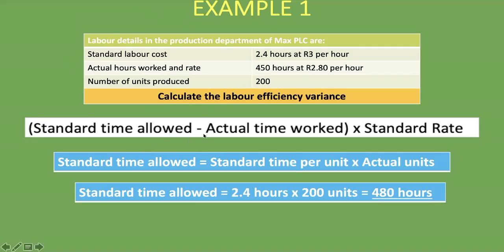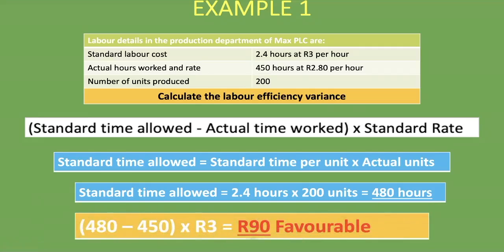The actual time worked is 450 hours. The standard rate is 3 rand per hour. So the calculation is: (480 hours − 450 hours) × 3 rand per hour = 30 × 3 = 90 rand favorable.